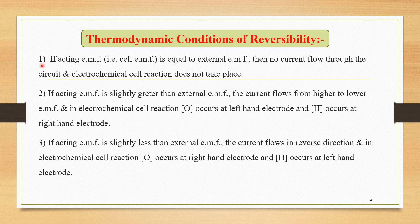The first important condition is: if the acting EMF, that is the cell EMF, is equal to the external EMF, then no current flows through the circuit, and the electrochemical cell reaction is absent. This is the first important thermodynamic condition of reversibility.